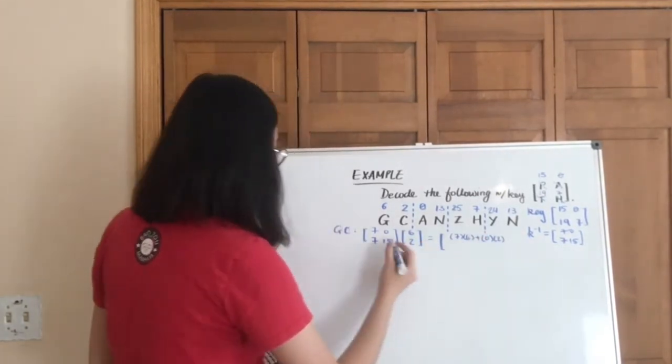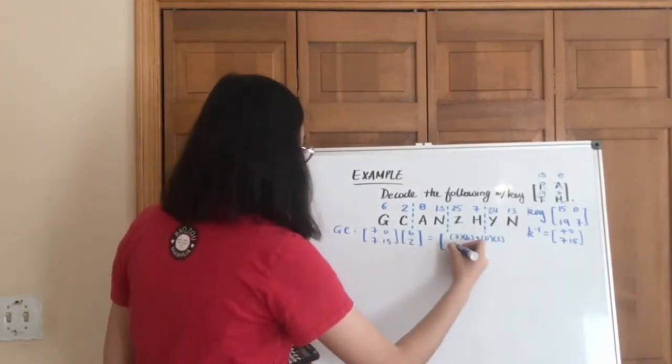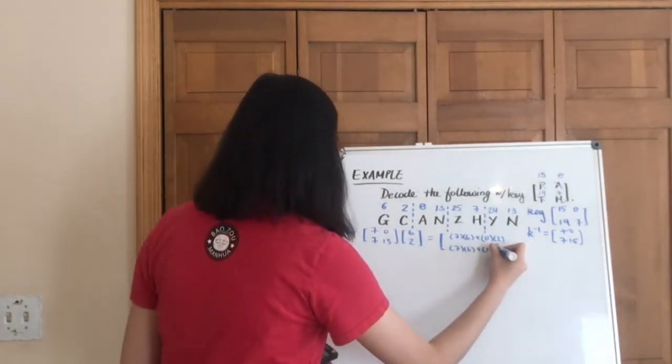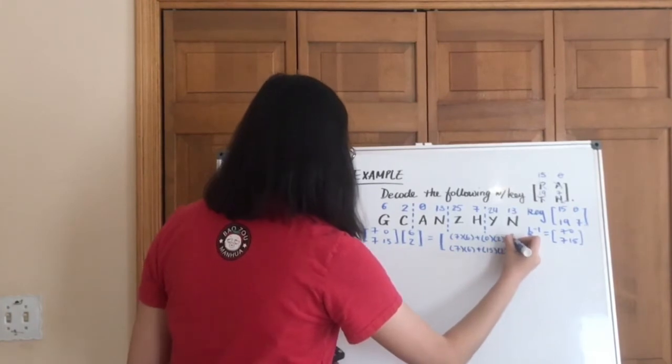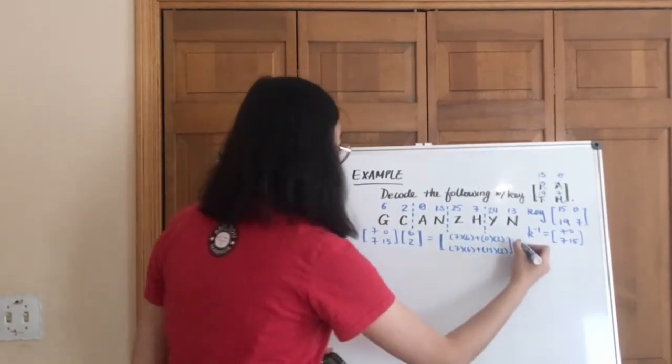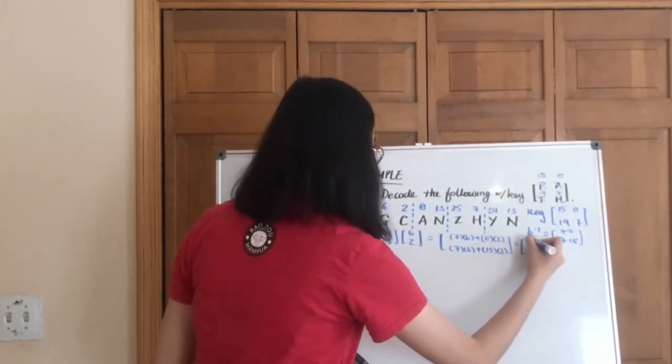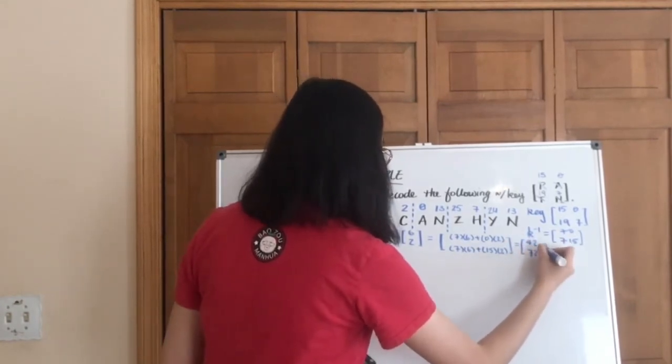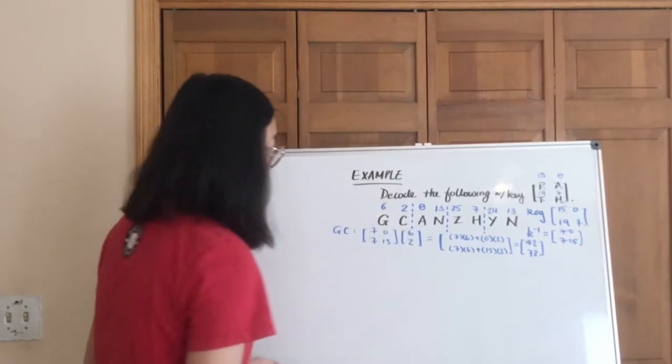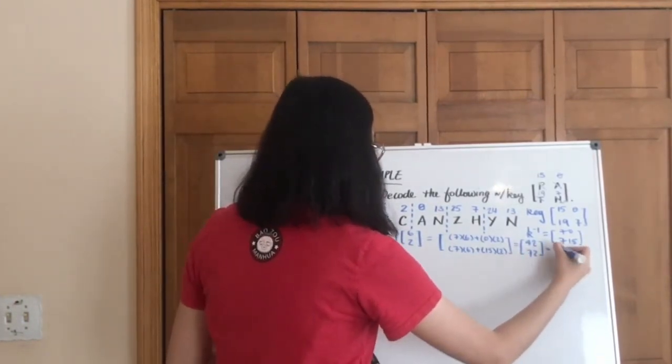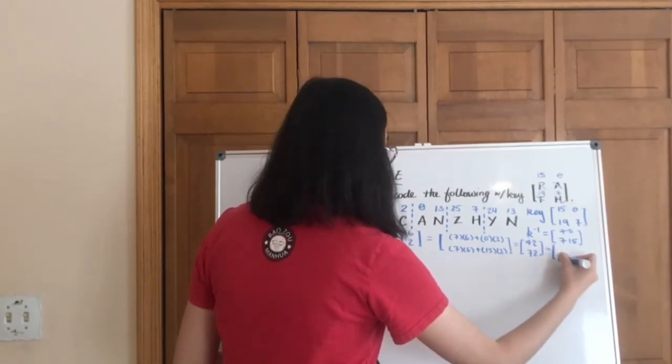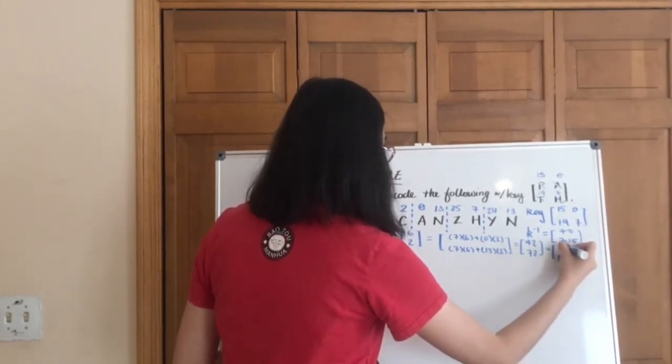Which is 0. And then we go on to the second row, 7 times 6 again, and then adding 15 times 2. So that's going to give us 42 and 72. And we're going to transfer that into mod 26, which will give us 16 and 20.